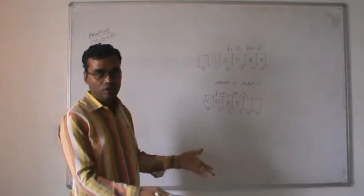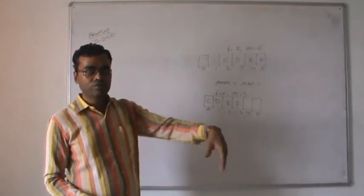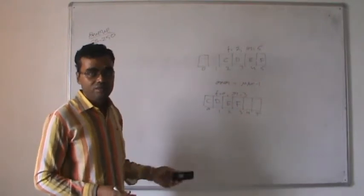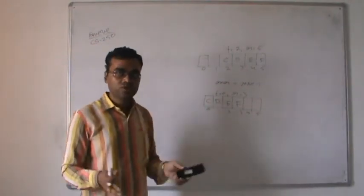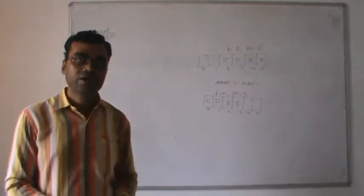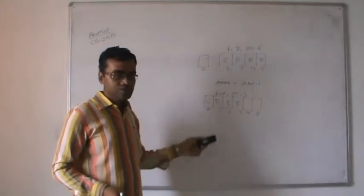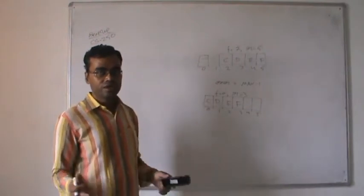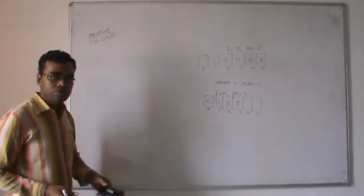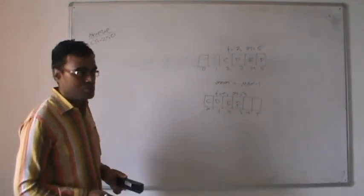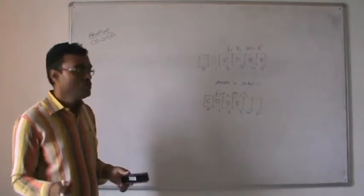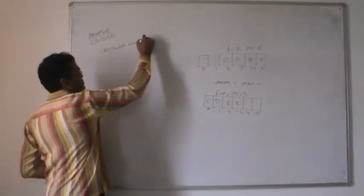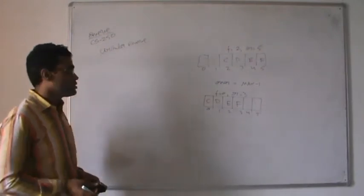Instead of maintaining a simple linear queue, we can maintain a circular queue. In a circular queue, the last element of the queue is linked with the first element. So the last element at position five is linked with the first element. This way we can utilize the free space that is available. In this circular arrangement, positions 0 through 5 are available and we maintain it as a circular structure.